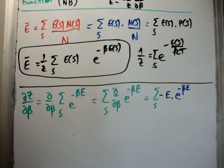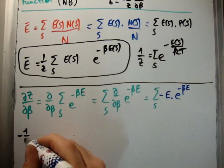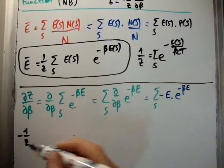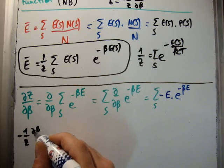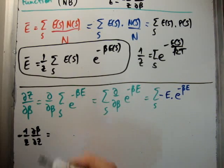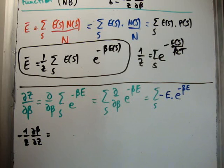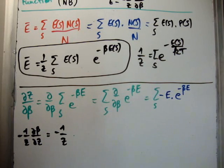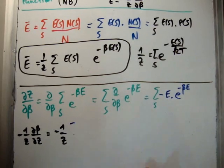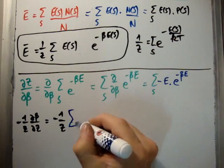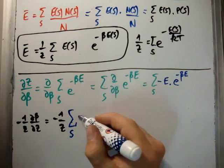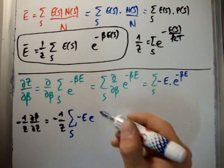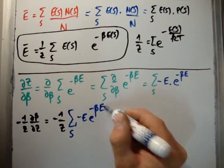Now we're just going to do a small bit of trickery here. I'm going to multiply by 1, pre-multiply by 1 over z. So if minus 1 over z del beta del z—what's that going to be equal to? Well, that's going to be minus 1 over z times the sum over s of minus E times e to the minus beta E.